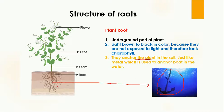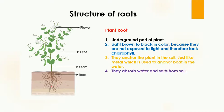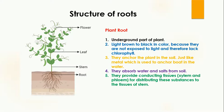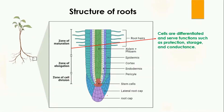Another important function of the root is that they absorb water and salts from the soil. Along with this, they provide conducting tissues — xylem and phloem — for the distribution of water to the upper parts of the plant.